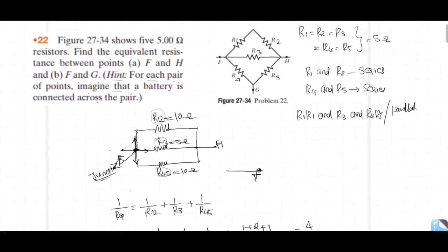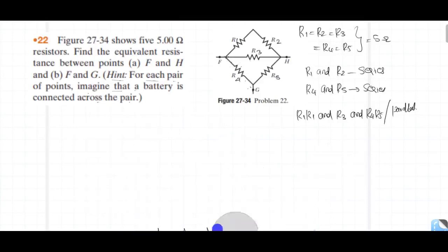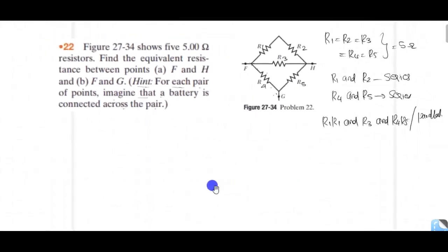So this is drawn. This is point F, this is point H. This is E equivalent resistance. This is equal to 2.50. Next we want to find the equivalent resistance between F and G.